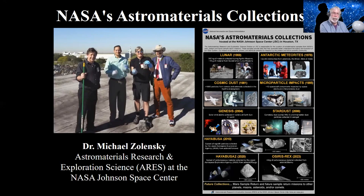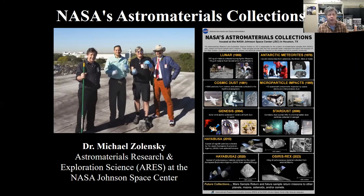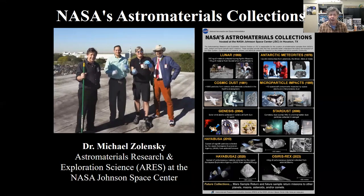Michael asks: have the results of the Hayabusa mission altered the HED meteorite classifications for Vesta? Vesta was actually visited by the Dawn spacecraft, not Hayabusa. Hayabusa went to an ordinary chondrite-type parent body. The Dawn mission orbited Vesta for quite a while but didn't return samples, and it didn't really change our understanding. The HED stands for Howardites, Eucrites, Diogenites — we still think those meteorites come from the asteroid Vesta. The Dawn mission didn't change our understanding of the meteorites that much. We still think they came from either Vesta or a related asteroid.